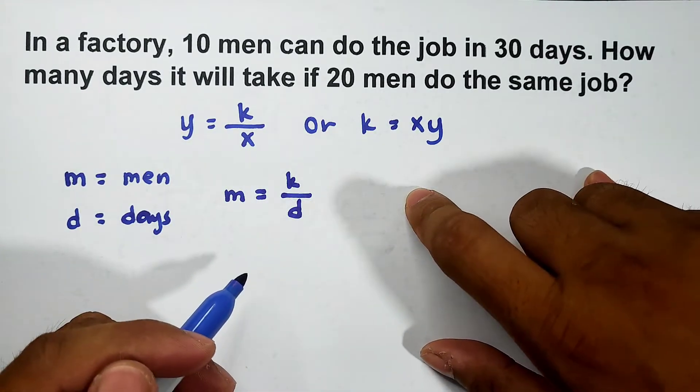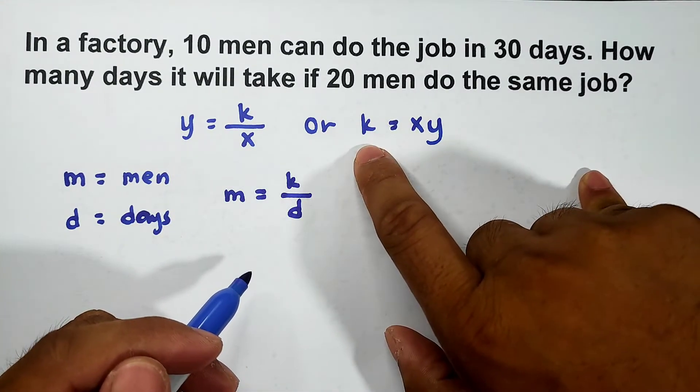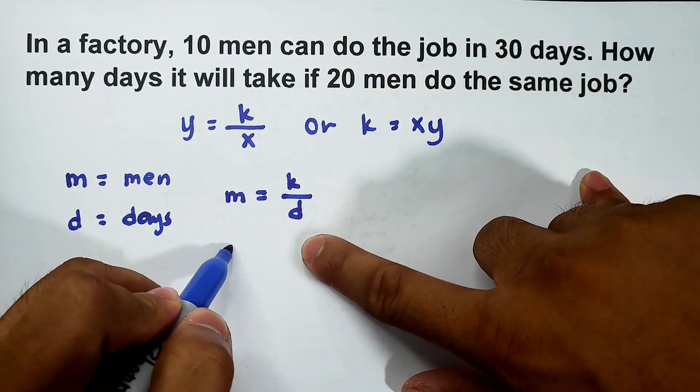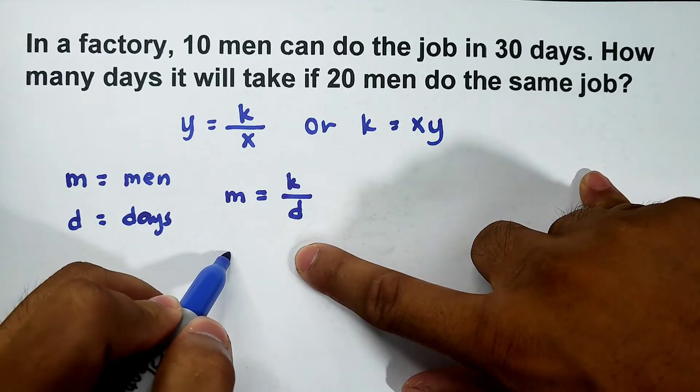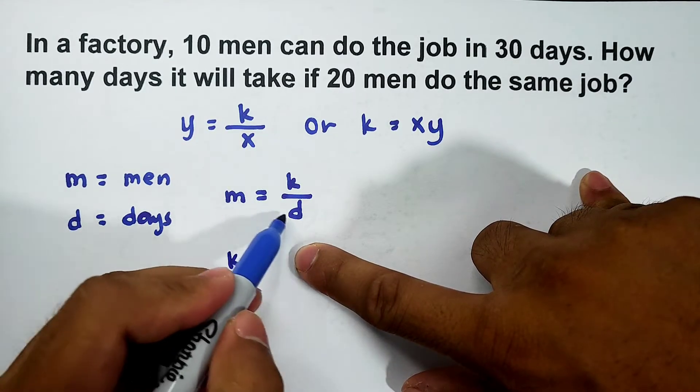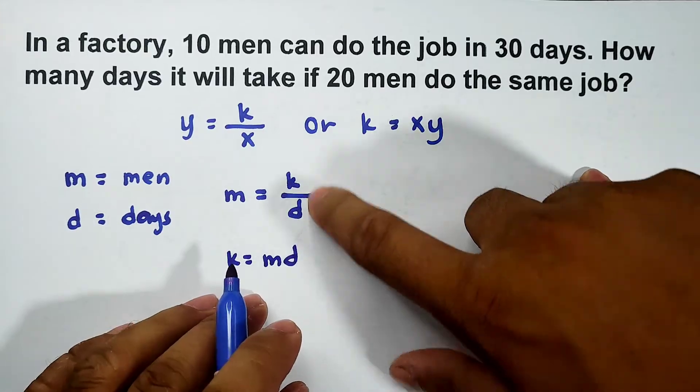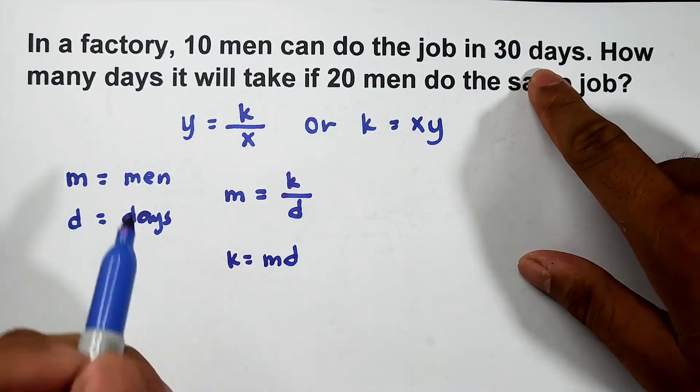Ngayon sir, paano pong first step natin? First step natin is to solve for the value of k. So basically, to solve for k guys, ito yung main formula natin ha. To solve for k, multiply mo lang yung m sa d. So m and d, in here sa first sentence natin, 10 men...